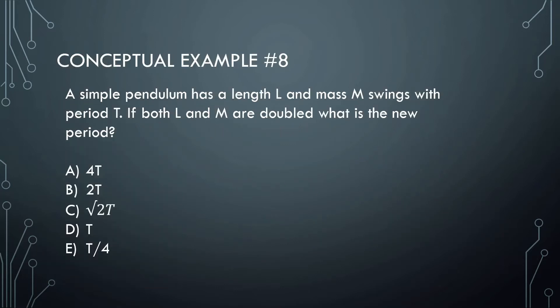A simple pendulum has a length L and a mass M with period T. If both L and M are doubled, what is the new period? If you want to do these kind of conceptual questions, you can always draw them, but the main thing is to look at the formula: 2π square root of the length divided by g. What this tells us right away is mass doesn't matter.